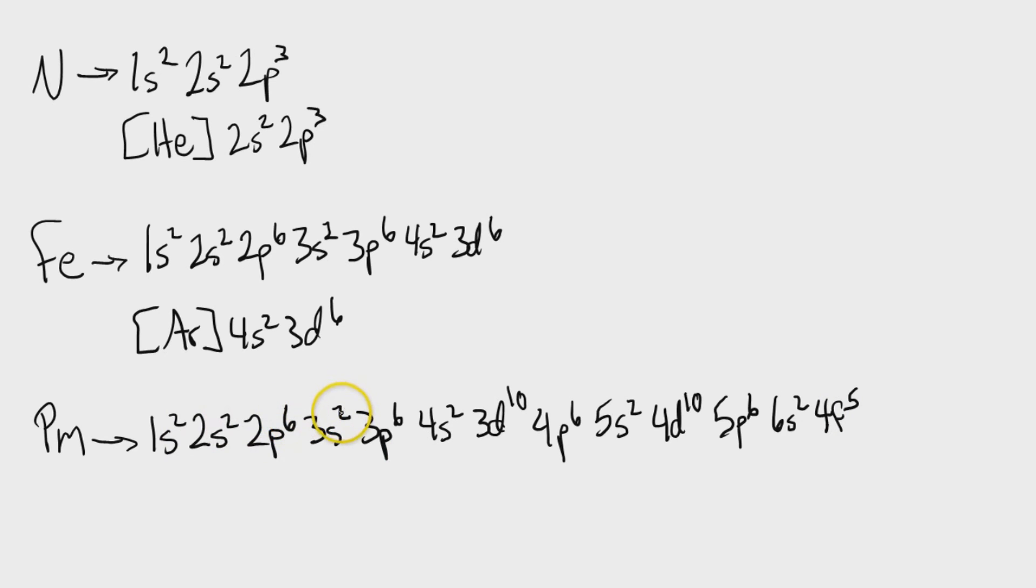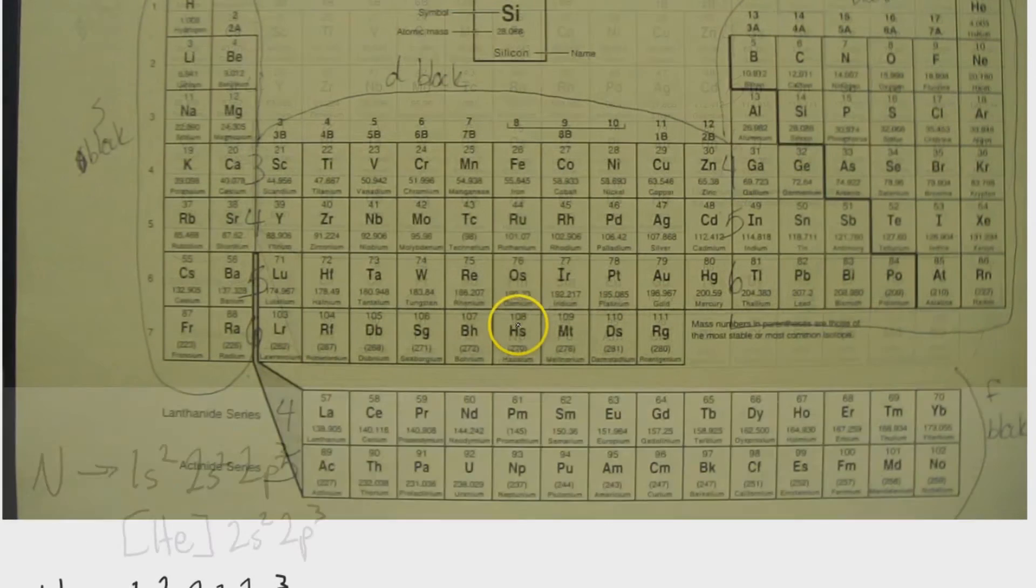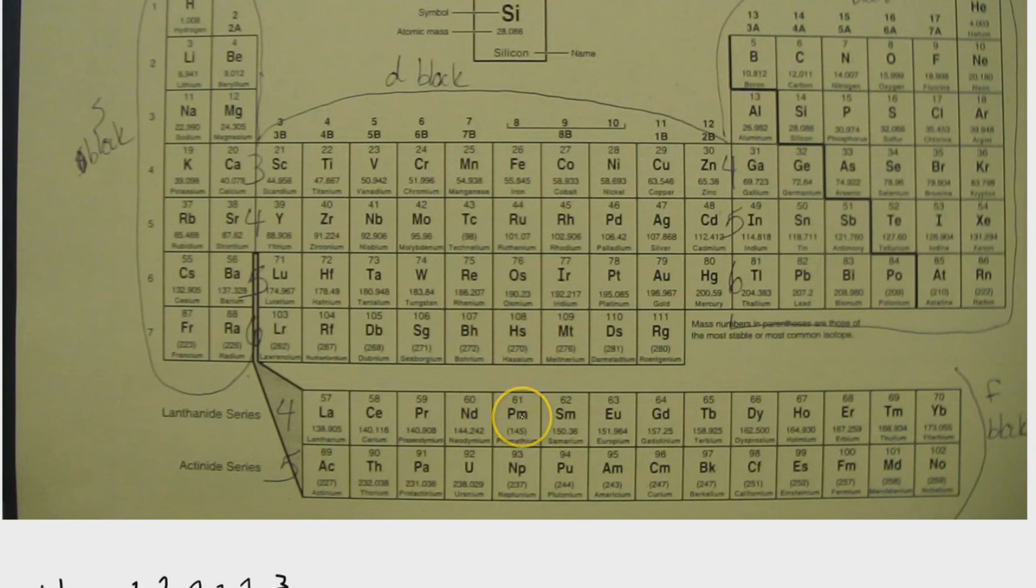Plus 6 is 10, plus 2 is 12, plus 6 is 18, plus 2 is 20, plus 10 is 30, plus 6 is 36, plus 2 is 38, plus 10 is 48, plus 6 is 54, plus 2 is 56, plus 5 is 61. And promethium is element number 61, right here.